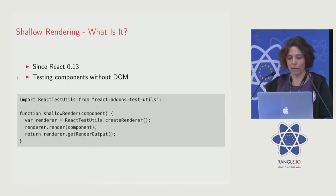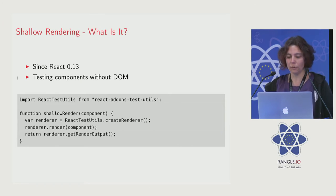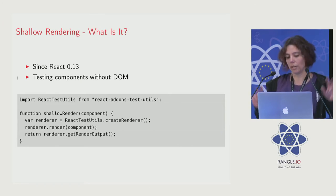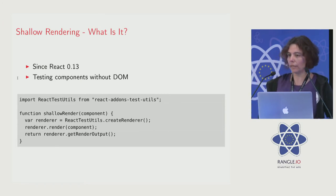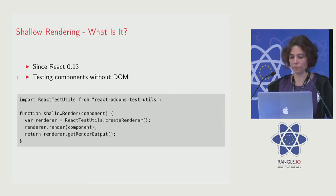It's quite simple. We can import a library, then we can create a shallow renderer. We hand it our component and then we ask it for the rendering result — the output.